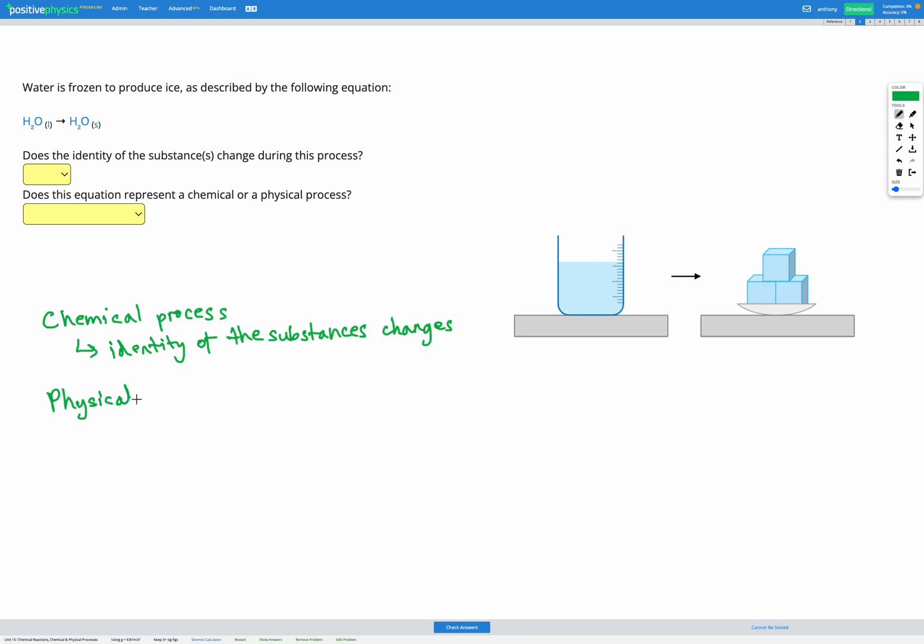In a physical process however some aspects might change but the identity of the substance will remain the same. To figure out if a process is chemical or physical we need to think about the identity of the substances before and after to see if they're the same or different.